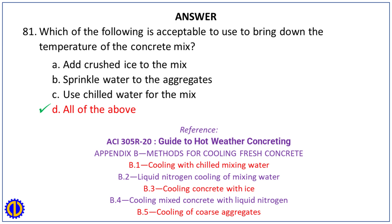Answer: D. All of the above. Reference: ACI 305R-20, Guide to Hot Weather Concreting, Appendix B — Methods for cooling fresh concrete: B.1 Cooling with chilled mixing water, B.2 Liquid nitrogen cooling of mixing water, B.3 Cooling concrete with ice, B.4 Cooling mixed concrete with liquid nitrogen, B.5 Cooling of coarse aggregates.